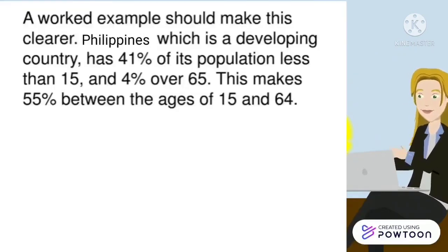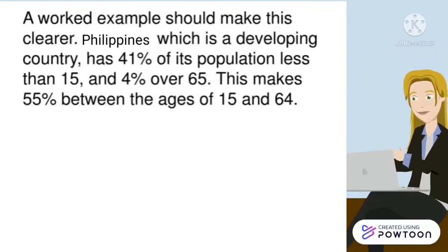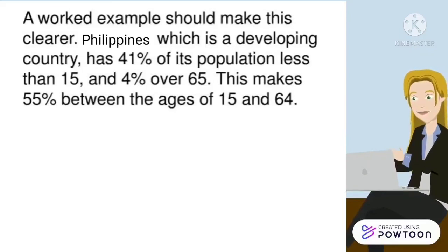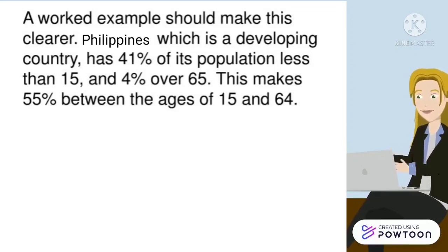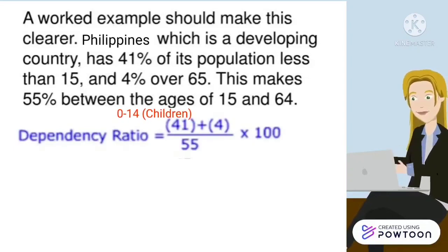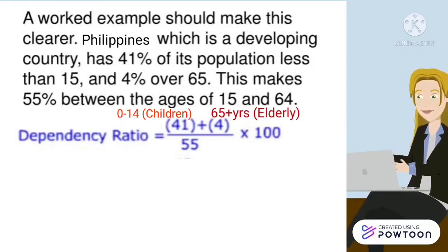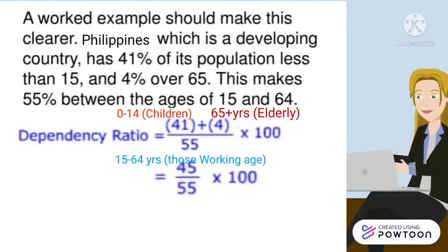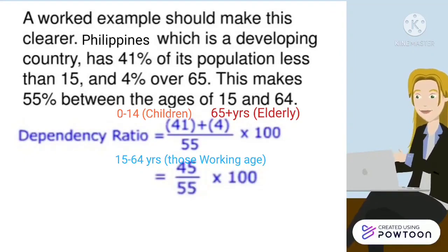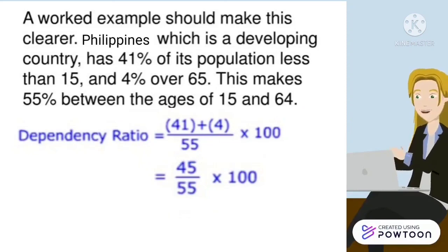Example number 1: In the Philippines, a developing country, 41% of its population is less than 15 and 4% is over 65. This makes 55% between the ages of 15 and 64. Dependency Ratio = (41% + 4%) ÷ 55 × 100 = 45 ÷ 55 × 100 = 81.8.